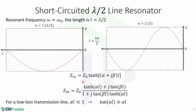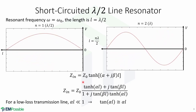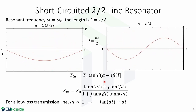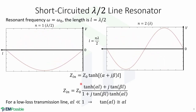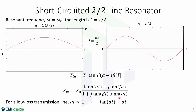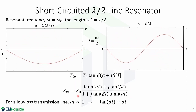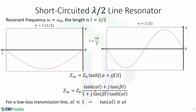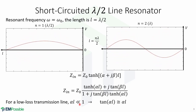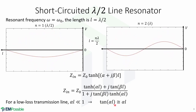The input impedance for a short-circuited half-wavelength transmission line is given by this expression, assuming a lossy transmission line. With a trigonometric identity, we can rewrite this expression. In practice, we usually use low-loss transmission lines, which means that alpha-L is much smaller than 1, so the term tangent(alpha-L) is roughly equal to alpha-L.